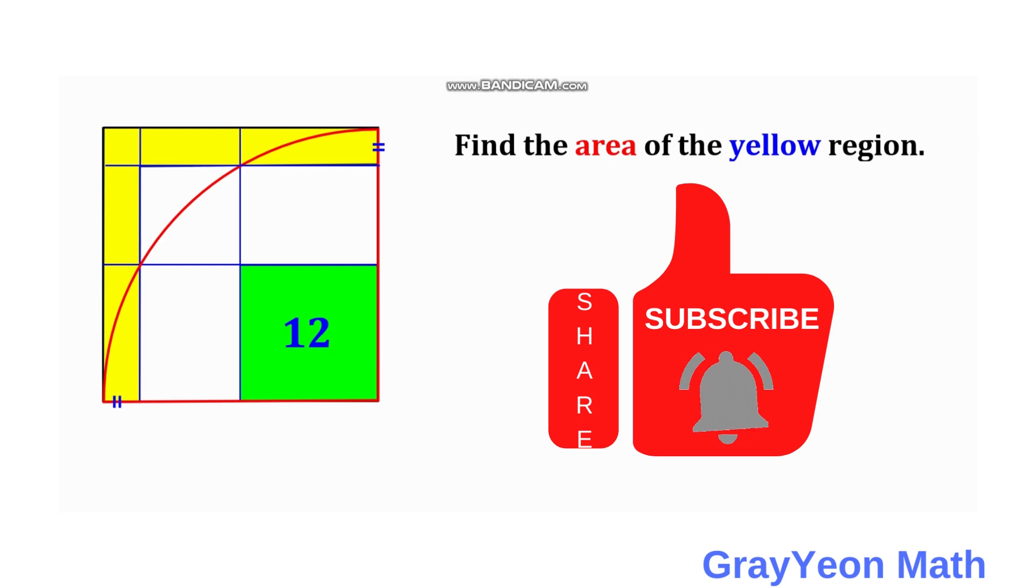Whose sides are also the side of this largest square, and inside this largest square is a smaller green square. And notice that this length is actually congruent with this length. And we are to find the area of the yellow region.